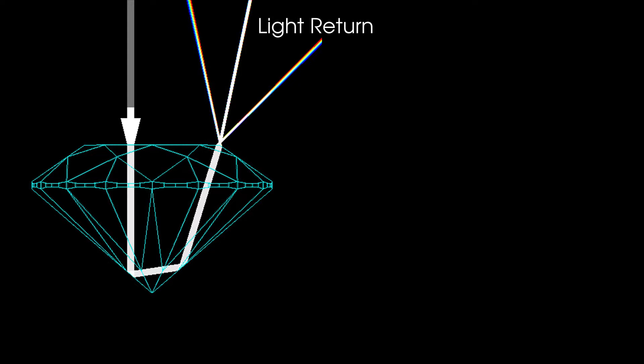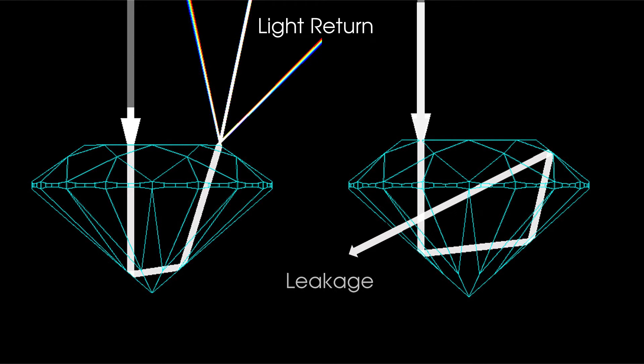Depending on how it was cut, light entering a diamond will either reflect and return up to the viewer's eyes, or escape through the bottom as leakage or windowing, causing dark areas.